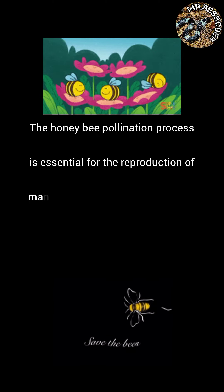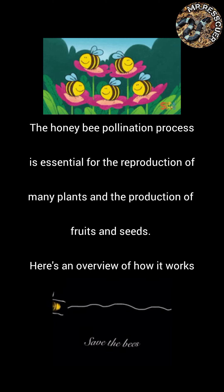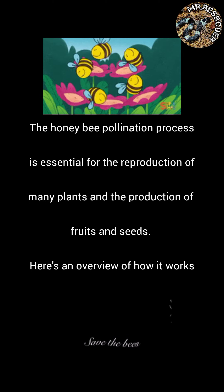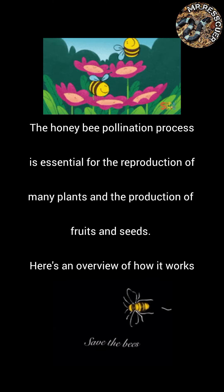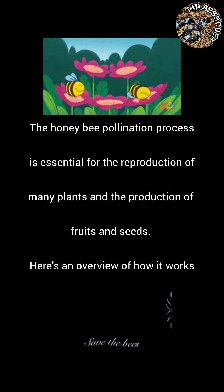The honeybee pollination process is essential for the reproduction of many plants and the production of fruits and seeds. Here's an overview of how it works.